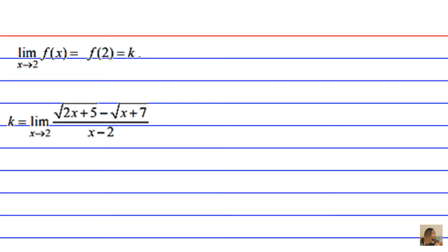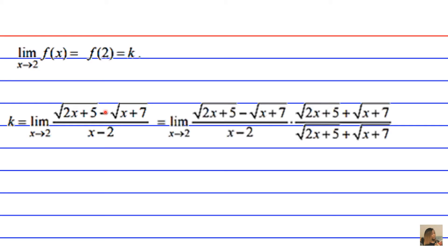Now what we're going to want to do is get rid of the radical signs in the numerator. So we can accomplish this by multiplying by the conjugate, and the conjugate is simply just changing the sign in the middle to a plus sign. So we now have the limit as x approaches 2 of 2x plus 5 minus x plus 7 over x minus 2 times the conjugate of these two radical expressions, which is the square root of 2x plus 5 plus the square root of x plus 7 over the square root of 2x plus 5 plus the square root of x plus 7.